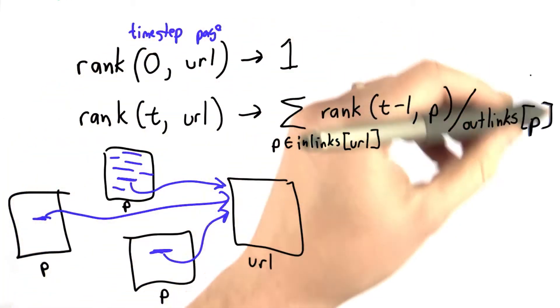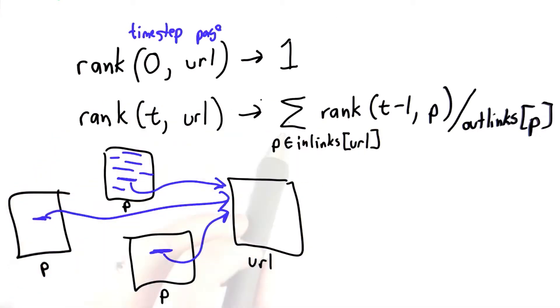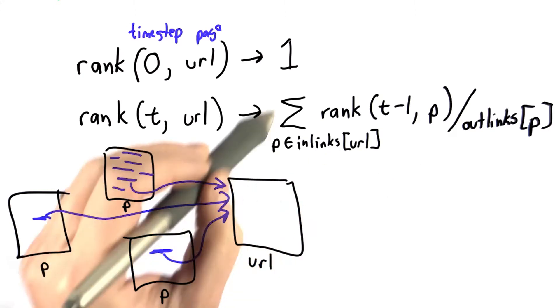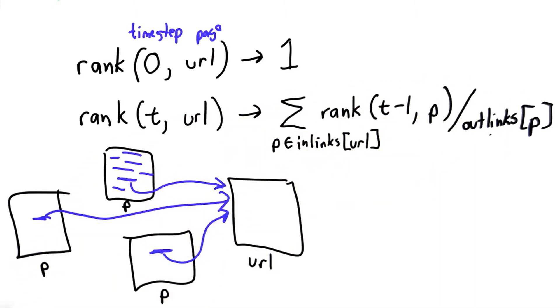We're going to have some random probability that you reach a page even when it has no links. So we're going to add something to this sum so it's not zero when there are no incoming links. The other thing we're going to do is scale this summation with what is called the damping function.